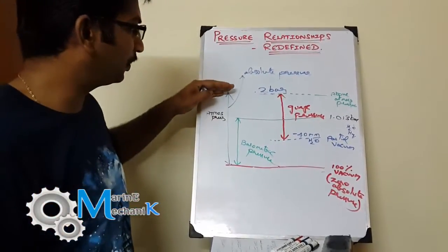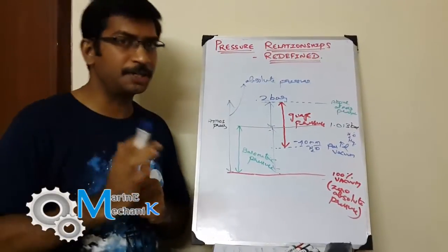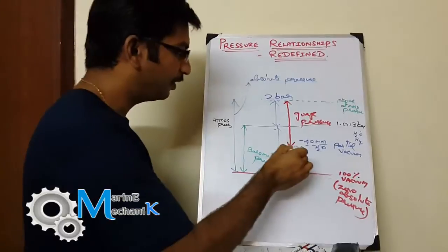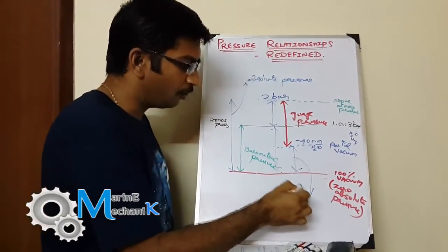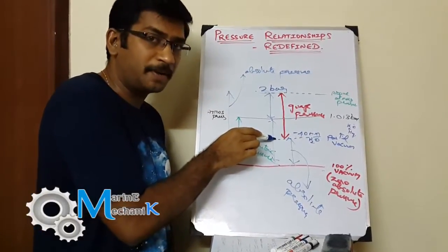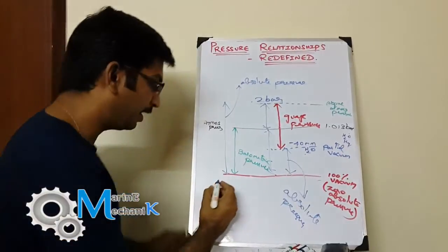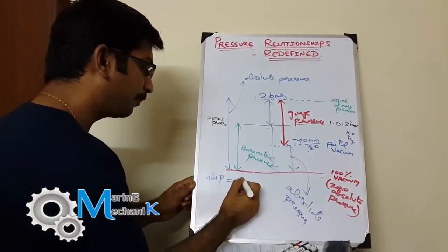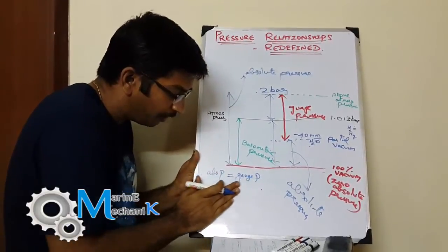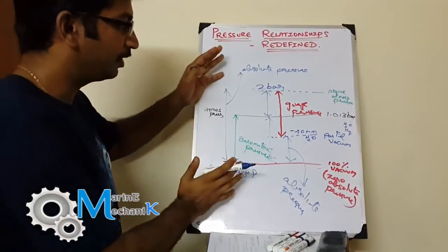There is one more scenario: if the gauge reads minus 40 mmH₂O, what is the absolute pressure? Since the pressure is less than atmospheric, the absolute pressure is only the region from that partial vacuum point down to zero absolute. Absolute pressure still equals gauge pressure plus atmospheric pressure — but since the gauge pressure is negative, the absolute pressure is less than atmospheric. That covers the relationships between all these various pressures.